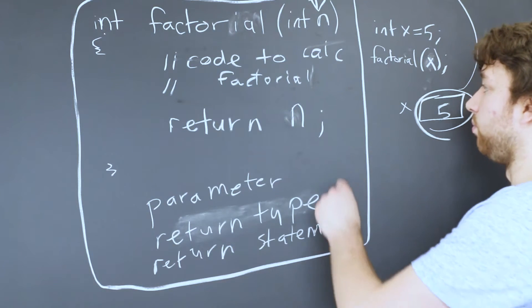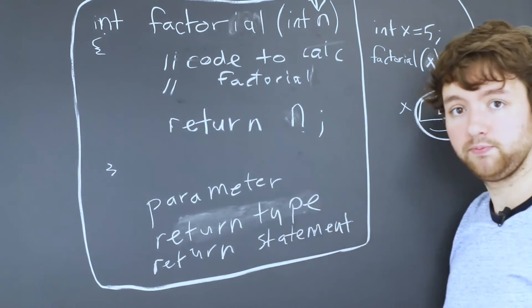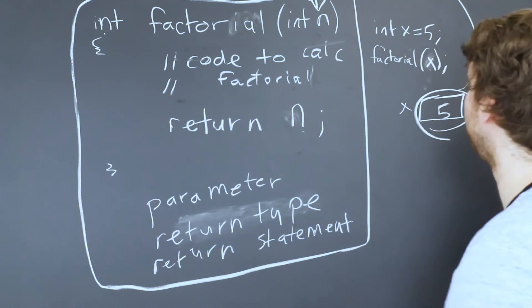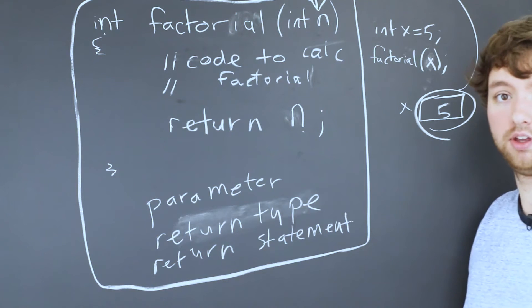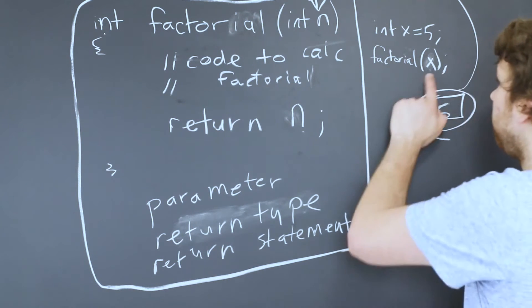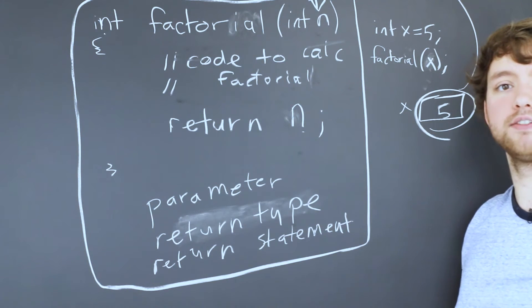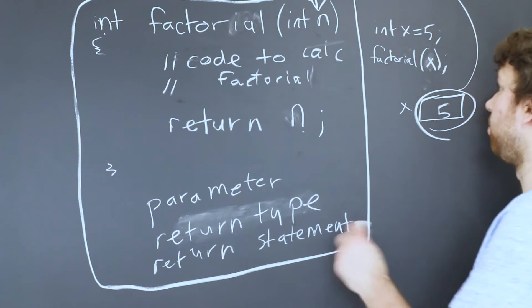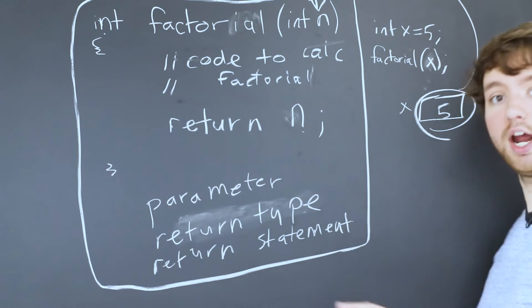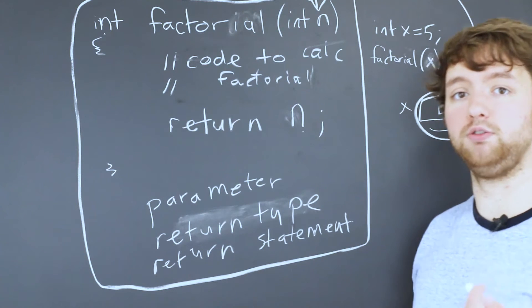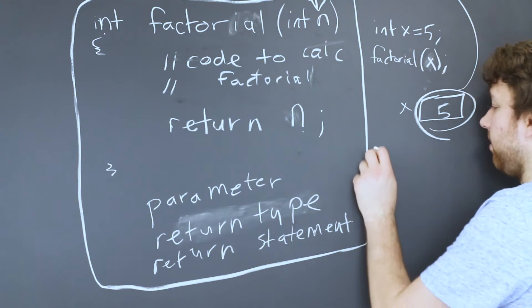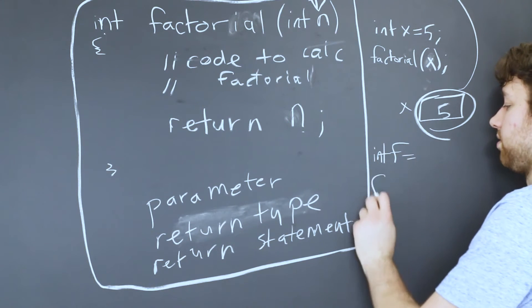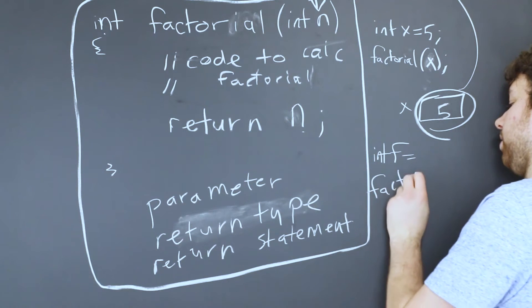So once we get to the point of returning that's going to be sent back to the caller. So that means we need to do something with it. If we just say factorial x it creates a factorial and then nothing happens because we're not doing anything with that value. So what we need to do is we need to either print it out or we need to assign it to a new variable. So I could say int f equals factorial of five.